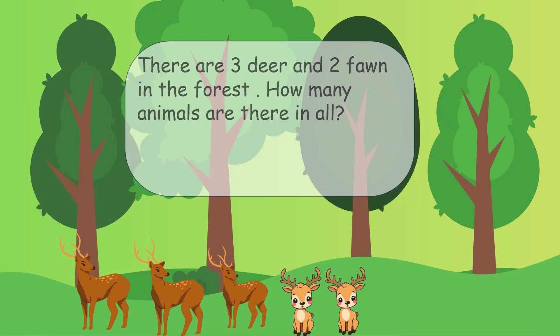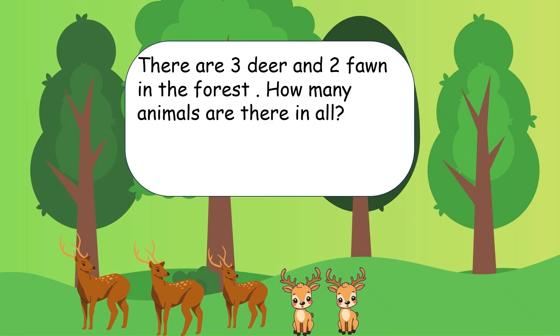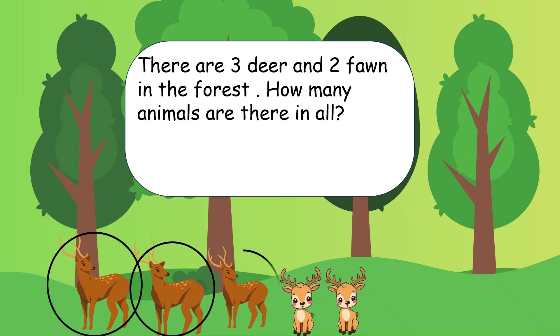There are 3 deer and 2 fawn in the forest. How many animals are there in all? Ek forest mein 3 deer aur 2 fawn thay. Fawn yaani 2 baby deer thay. Toh kul mila kar kitne animals hain? Your time starts now.